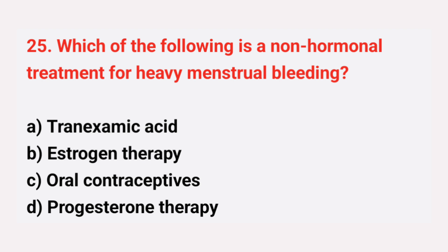Question number 25: Which of the following is a non-hormonal treatment for heavy menstrual bleeding? The right answer is option A, tranexamic acid.